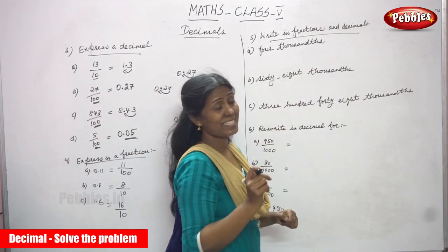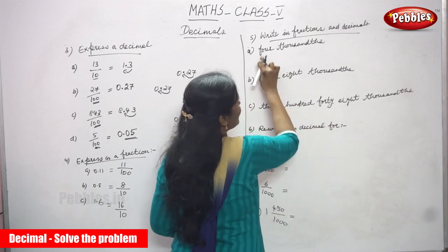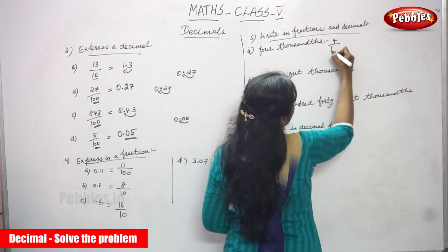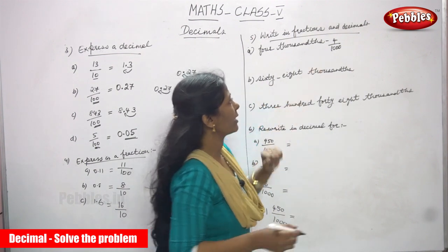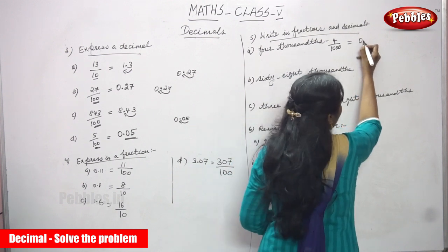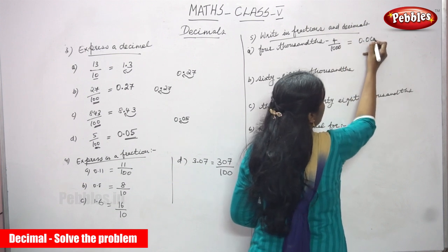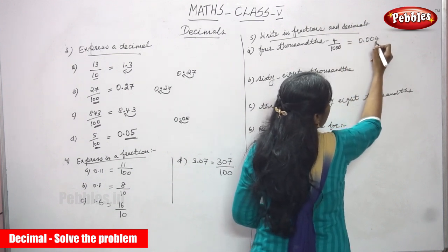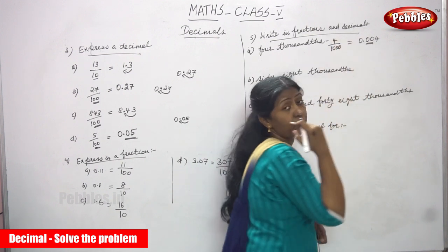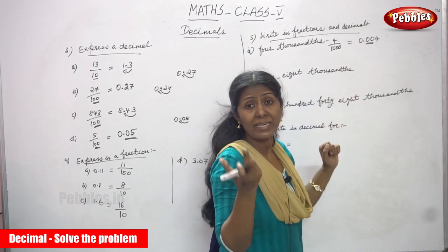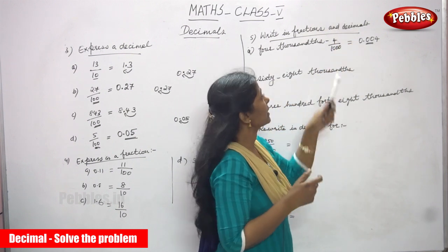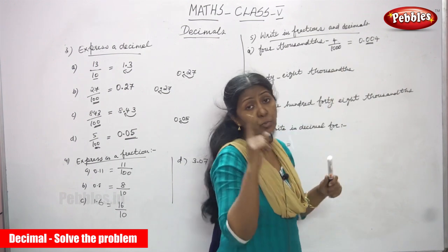Now write in fractions and decimals. The number is 4 thousandths — first write in standard form. The fraction is 4 by 1000. Now convert to decimal: 0.0 represents the decimal and the point is the decimal point. In 1000 there are 3 zeros, but the numerator has only 1 digit, so you need 2 more digits.